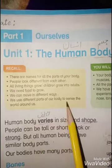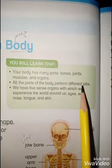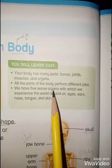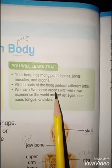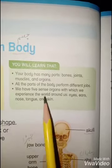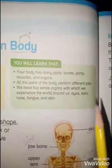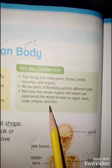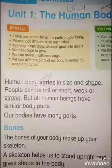Now, what we will learn in this lesson: your body has many parts — bones, joints, muscles, and organs. We will read about each one in detail. All parts of your body perform different jobs. We also have five senses, which we already know about — the organs through which we experience the world. The five senses are: eyes, ears, nose, tongue, and skin.